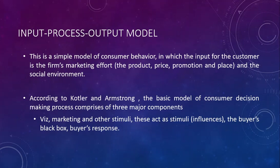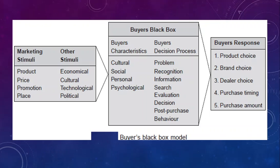The external stimuli that a consumer responds to include the marketing mix, namely product, price, place, and promotion, and other environmental factors in the market. The four Ps represent a set of stimuli that are planned and created by the company. The external stimuli are also supplied by economic, technological, cultural, and political situations. Together, these factors represent the external circumstances that help shape consumer choices.